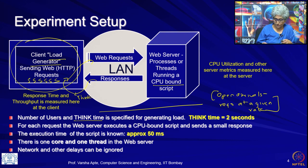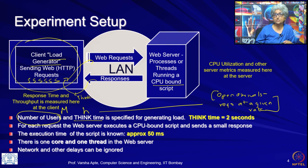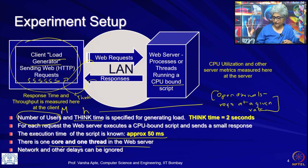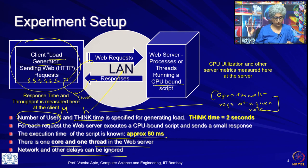The way we give specification to the load generator is we provide the number of users, denoted by m as usual, and the think time h. That is used as input by the load generator, meaning each of these threads is doing this request-response loop. The execution time of the script, just like we saw in the previous open experiment, is approximately 50 milliseconds. There is one core and one thread at the web server just to keep things simple, and this experiment is happening on the LAN, so we do not have to worry about network delays.